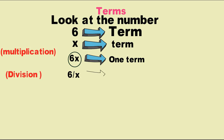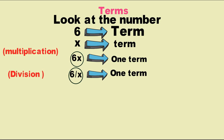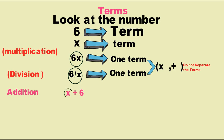Where we have 3 divided by x, that is a single term. So it is a term — these are separate, not to be combined into one term.